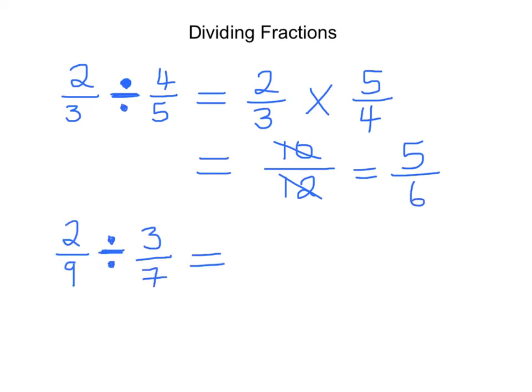So let's try this problem: 2 ninths divided by 3 sevenths. Just doing as we did before, turning it into a multiplication problem, it's 2 ninths multiplied by 7 over 3. Doing the multiplication, 2 sevenths are 14, and 9 threes are 27. So the answer is 14 twenty-sevenths.